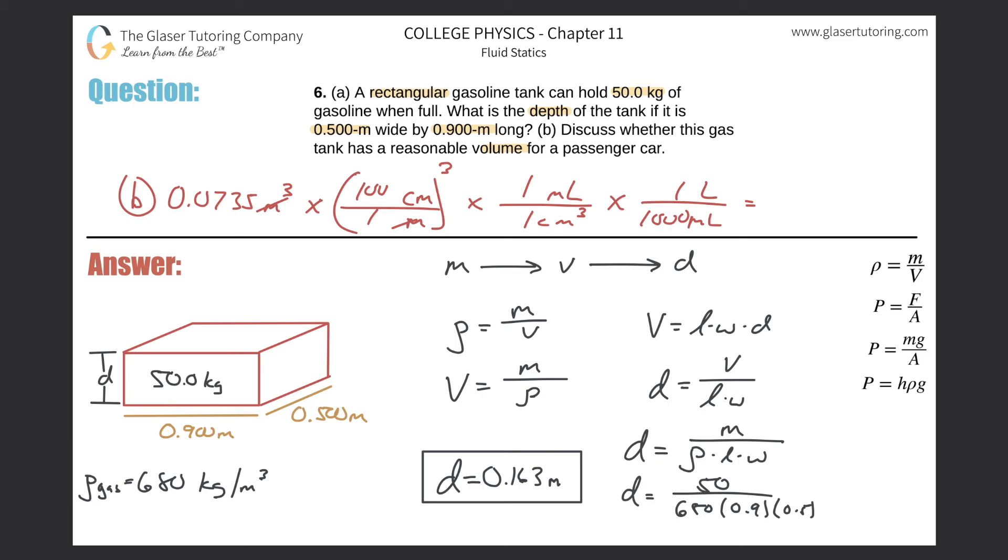We take 0.0735, multiply it by 100 cubed, and then divide it by a thousand. We get a value of about 73.5 liters. As I'm sure most of you know, this is reasonable.